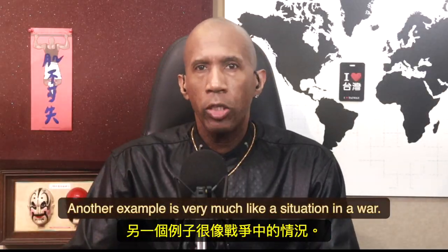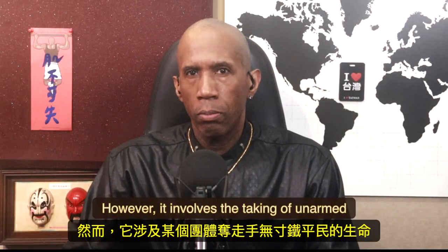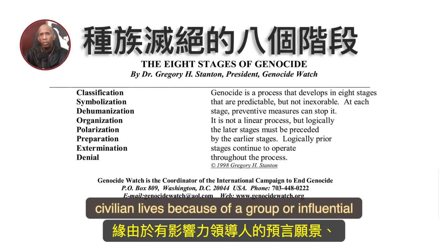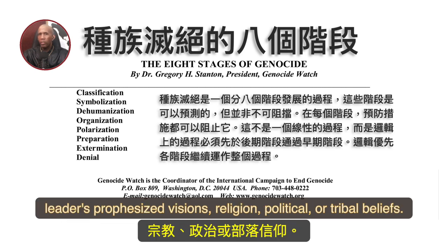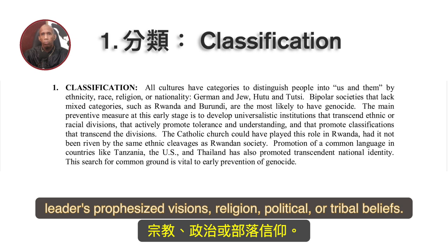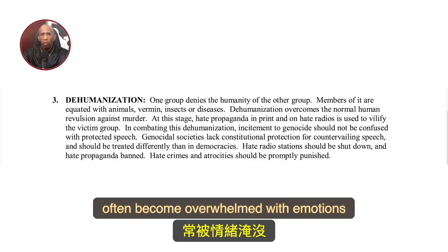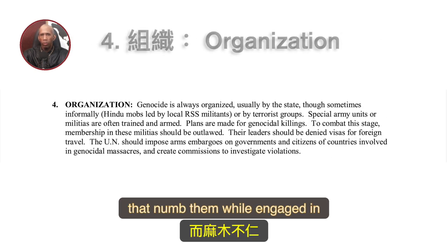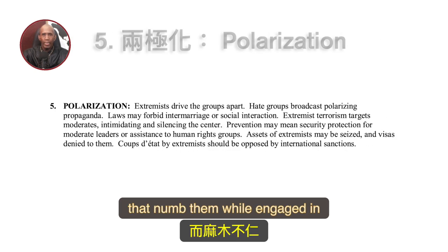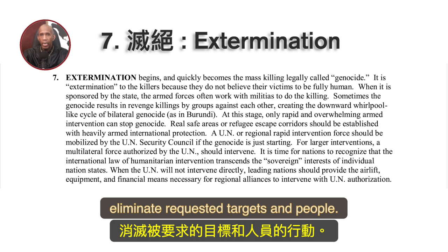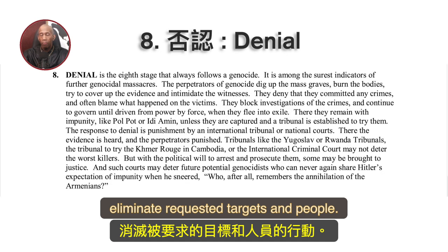Another example involves the taking of unarmed civilian lives because of a group where influential leaders prophesy divisions based on religion, political, or tribal beliefs. Those who carry out the requests of these groups and leaders often become overwhelmed with emotions that numb them while engaged in activities to degrade, suppress, or, in some cases, eliminate targeted people.